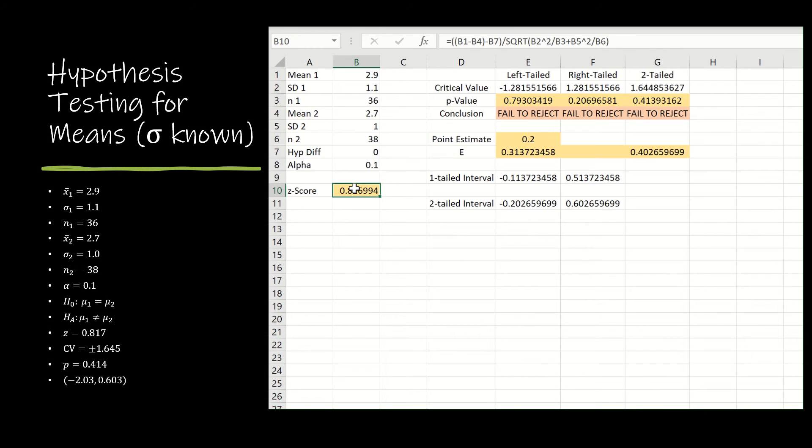Same z-score is just the z-score formula. So I'm taking the first mean minus the second mean minus the hypothesized difference, and then divided by the square root of the first standard deviation squared divided by n₁ and the second standard deviation squared divided by n₂.